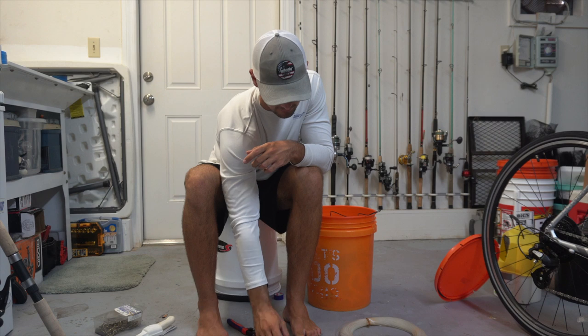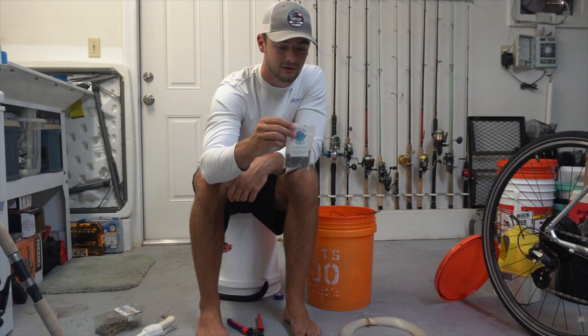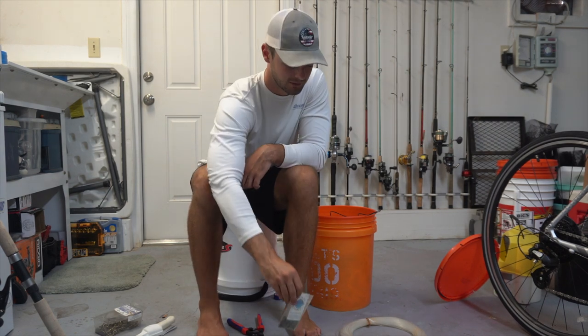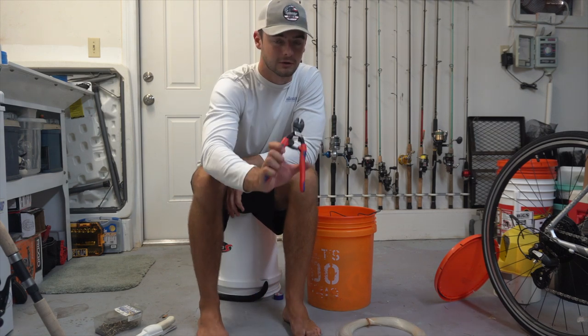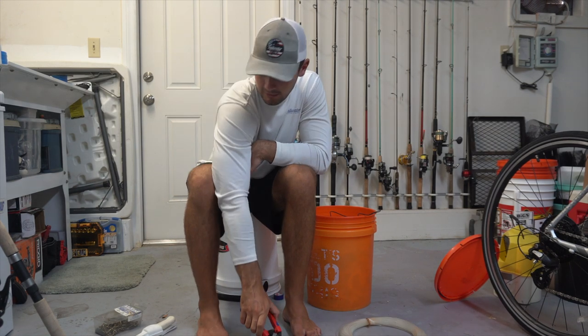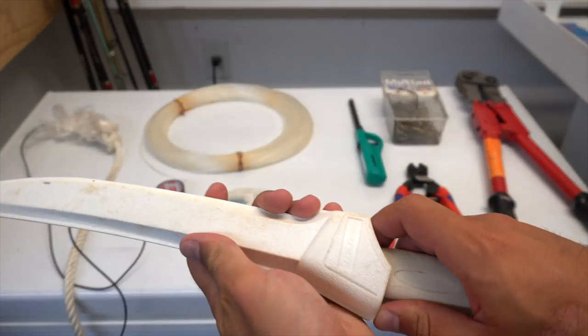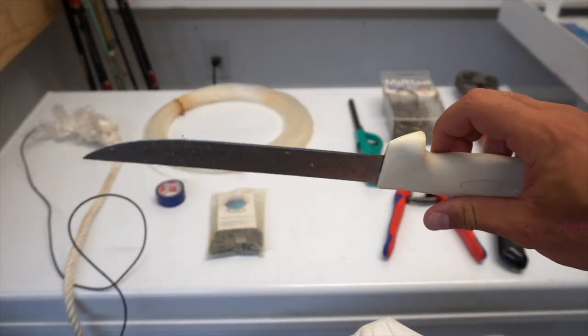Speaking of crimps, you're going to need some crimps and these are two and a half millimeter crimps that we're going to be using. You're also going to need a good pair of cutters to cut your mono. You're also going to need a knife to cut your rope to get this whole thing started and at the end.